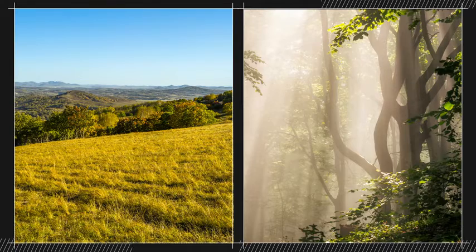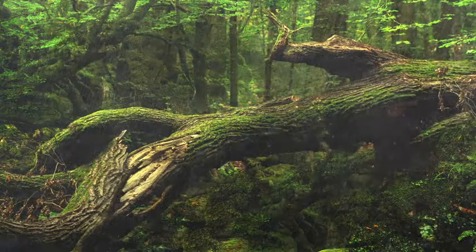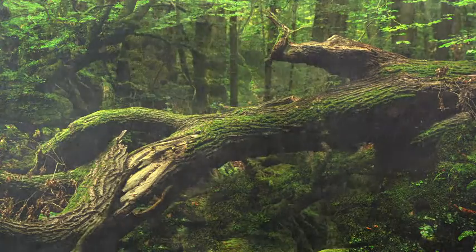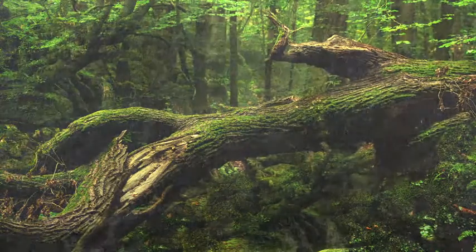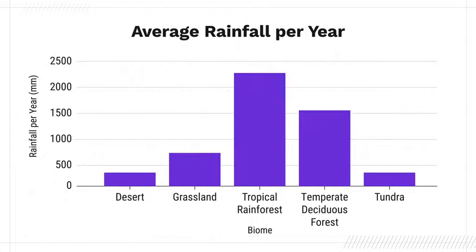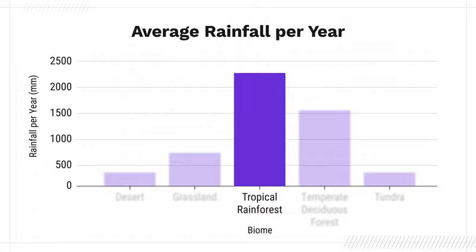Scientists rely on additional climate measurements, like rainfall, to categorize biomes. This graph compares the average annual rainfall in several biomes on Earth. Which biome has the most annual rainfall? Tropical rainforests have the most rainfall compared to all the other biomes on Earth.